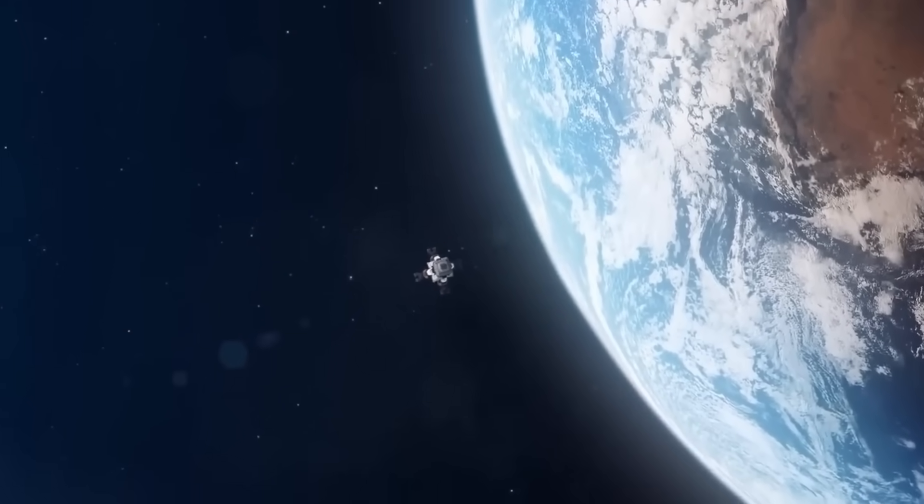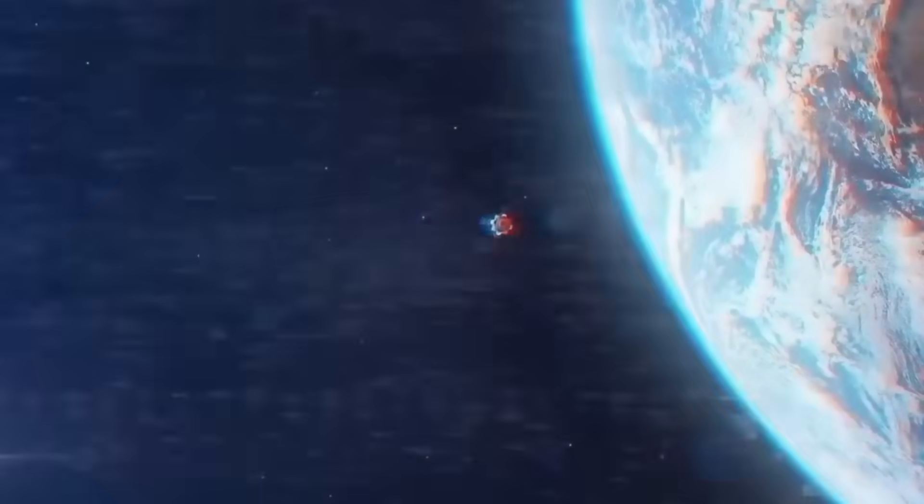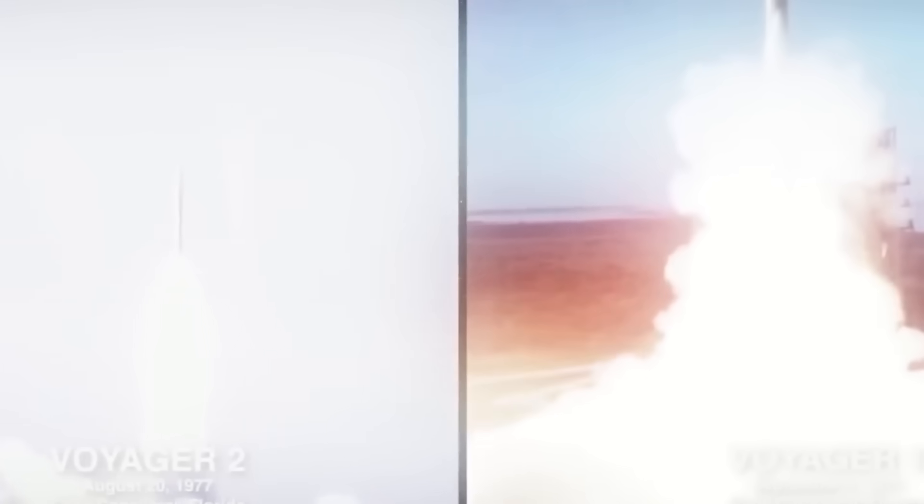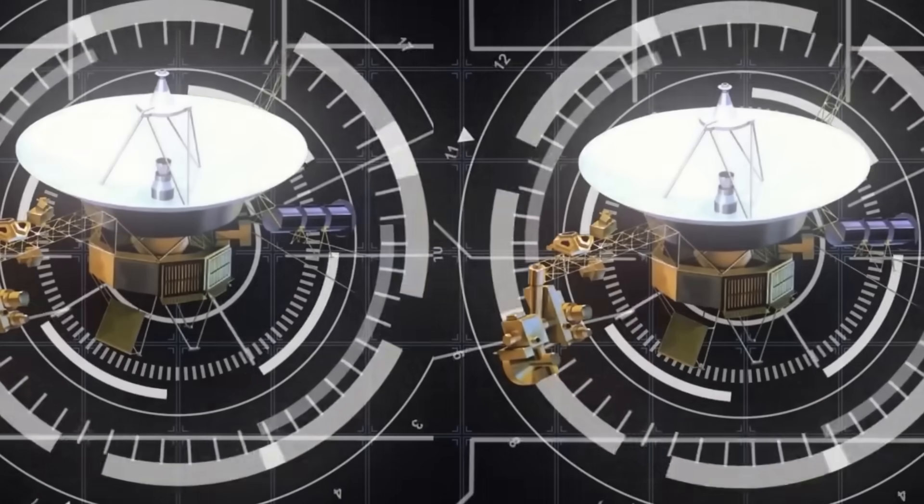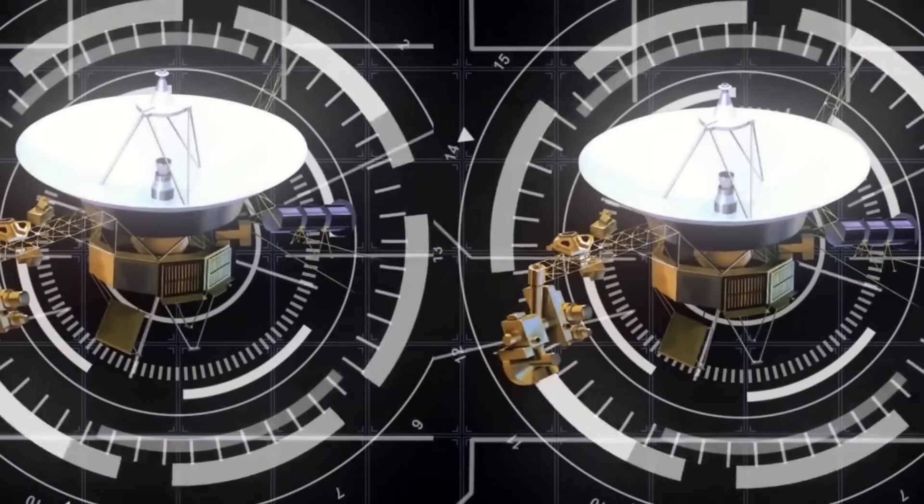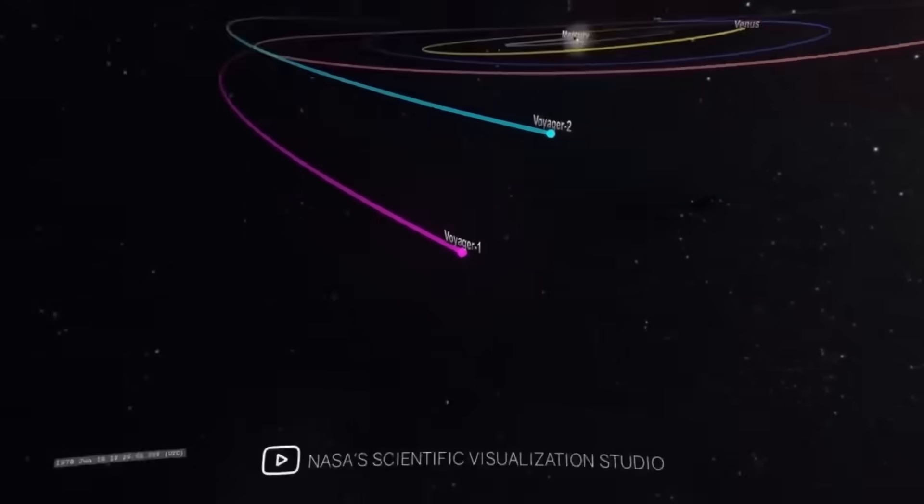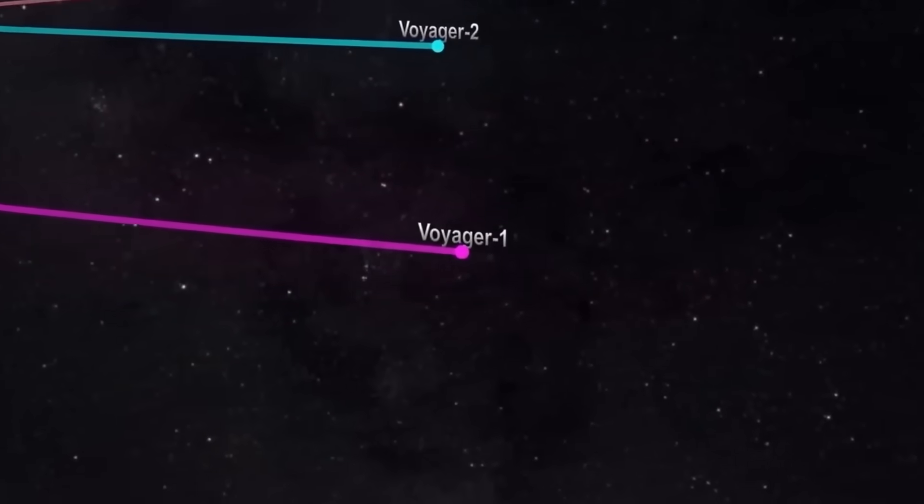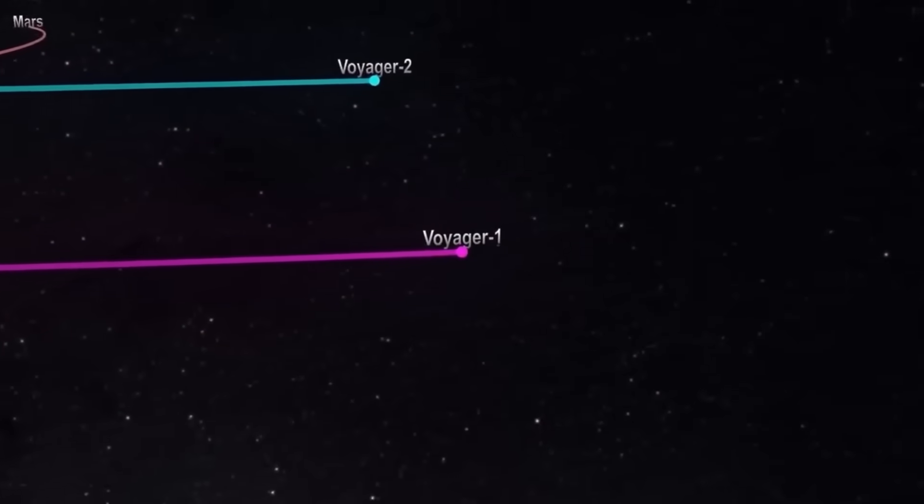The fix? Instruct Voyager to use the correct, still functional computer system once more. It sounds simple, but getting a 46-year-old spacecraft billions of kilometers away to override its own autonomous logic and trust you again—that's an act of delicate persuasion only a few engineers in history will ever know. But it worked. Voyager 1 slowly began to speak coherently once again. The ghost in the machine was silenced, or at least it seemed that way.